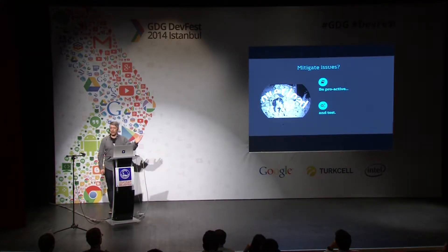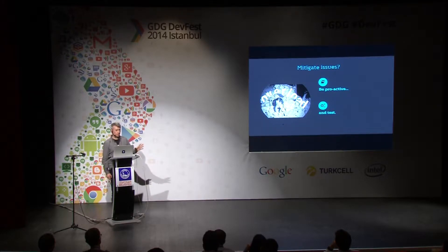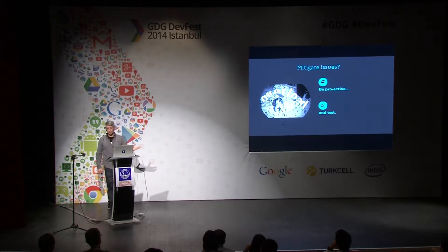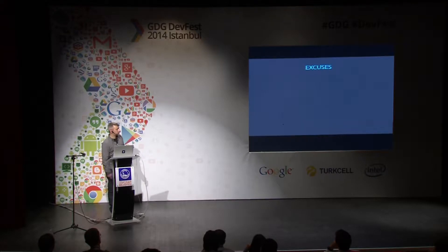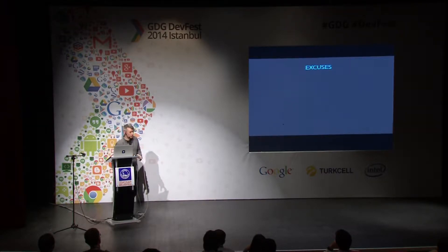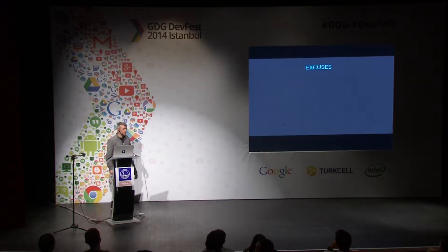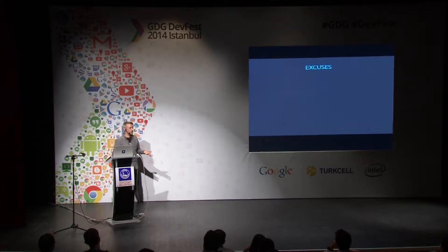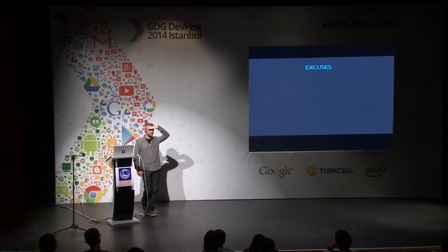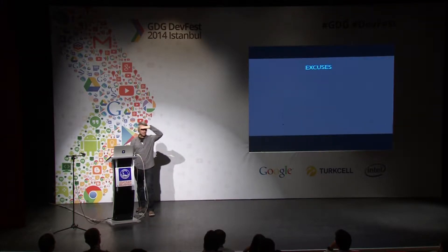You really don't want to find out when your application appears in the Play Store that you have a lot of problems — you want to be proactive and find them while you're still developing, not while the one-star reviews are pouring in. Who here is an Android developer and writes tests? Not so many. Is anybody willing to say the excuse they're using for not writing tests?